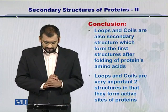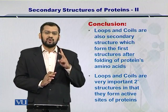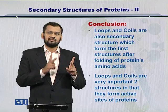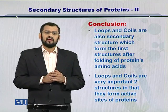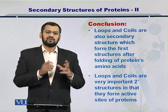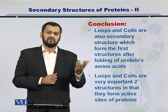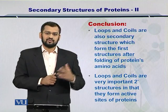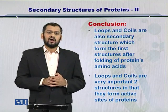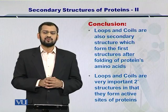In conclusion, the loops and coils are two other forms of secondary structures besides the alpha helices and beta sheets. The loops and coils are active and they are exposed on the surface of the protein. They help the protein to interact with the external world or other proteins, and they are mostly present in the active sites on the surface of proteins.